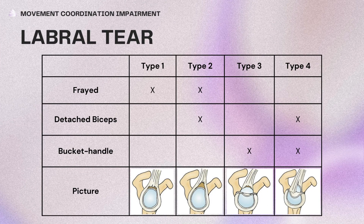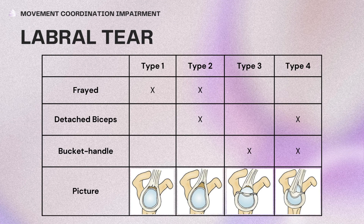There are different types of labral tears. Type 1 lesion is degenerative, common in ages 40 and older, marked by fraying of the superior labrum with the biceps still intact. Type 2 has fraying of the superior labrum with a detached biceps anchor — it is the majority of lesions and common in overhead athletes due to the peel-back mechanism during the maximum cocking phase of the throwing motion. Types 3 and 4 are bucket handle tears: Type 3 has a normal biceps tendon attachment, while Type 4 involves a tear of the biceps tendon.